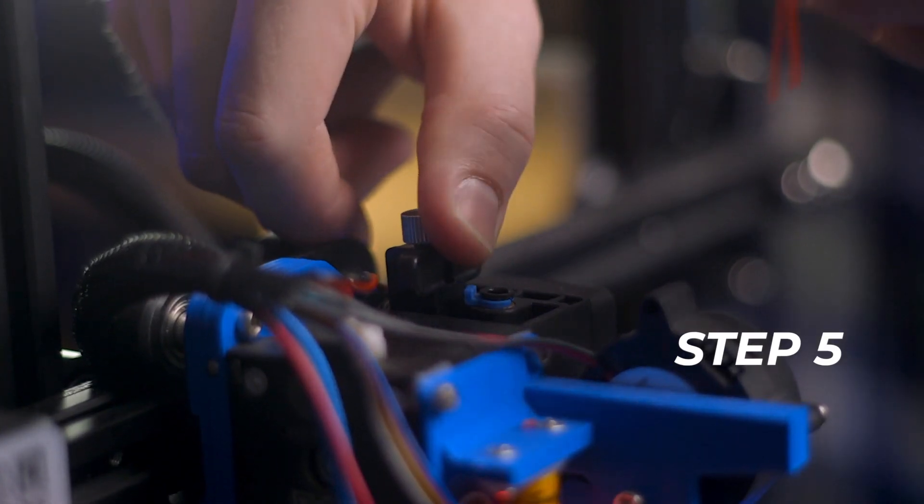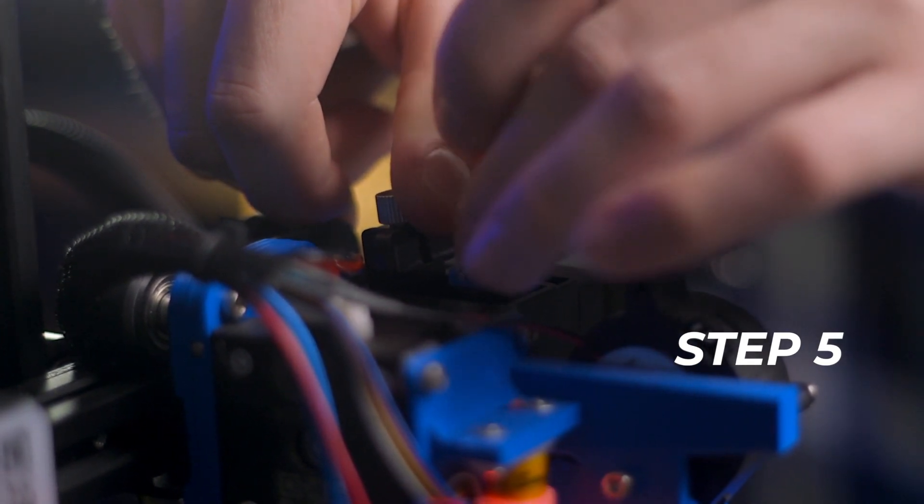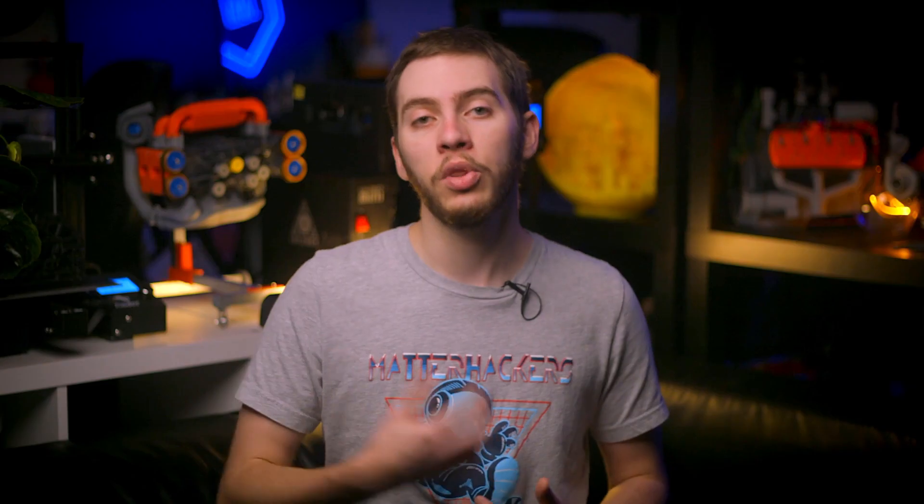Step 5: With your other hand, insert the filament into the extruder. With a direct drive where the extruder is attached to the printhead, this can be done by feel until you can see the filament extruding out the nozzle. With a Bowden extruder, you will be able to see the filament enter the Bowden tube and then easily push it through the nozzle.